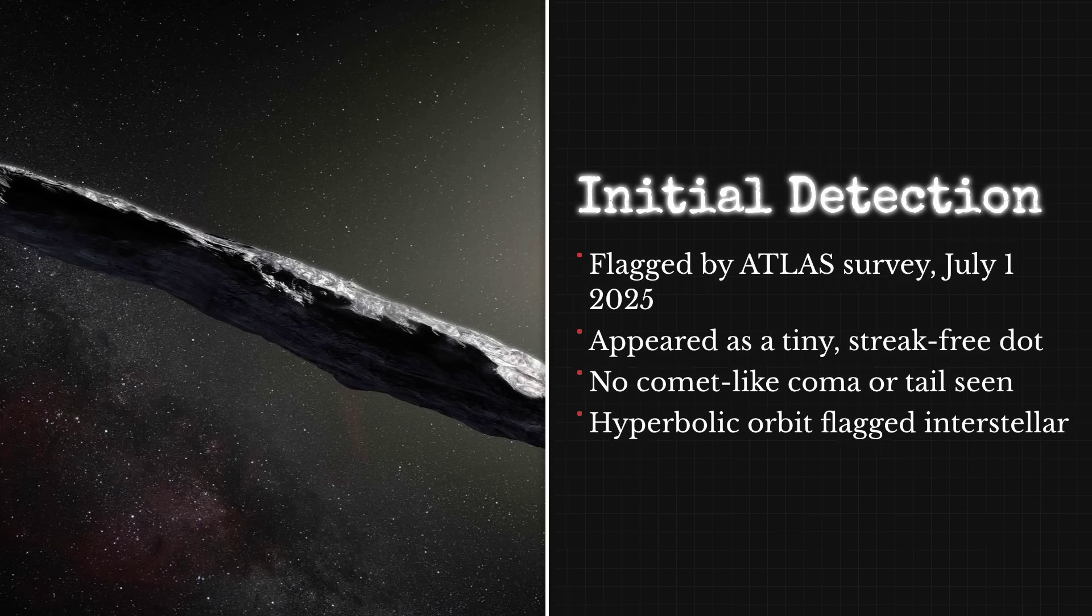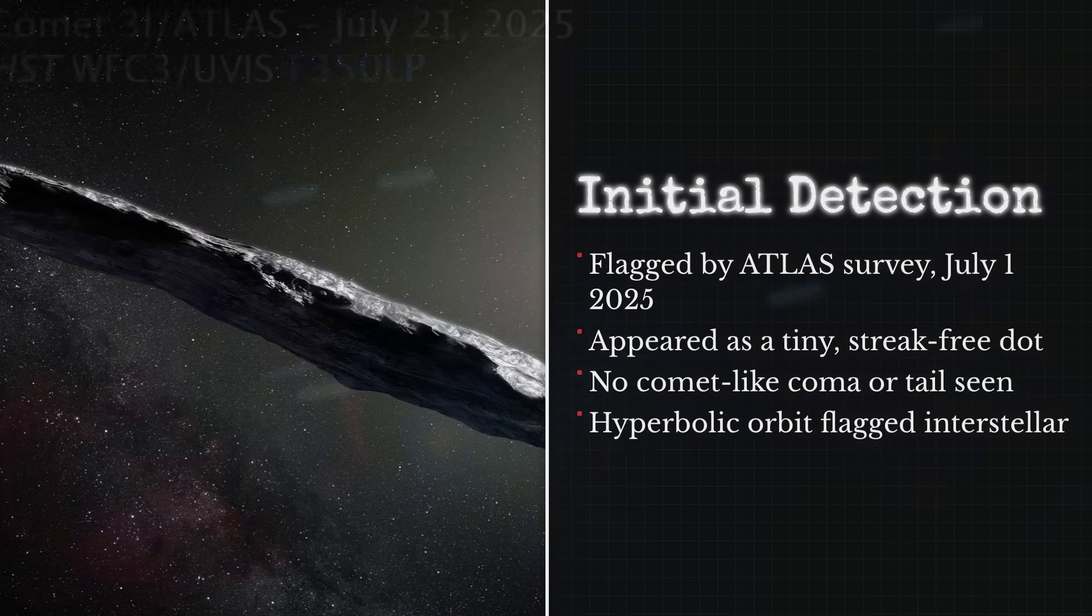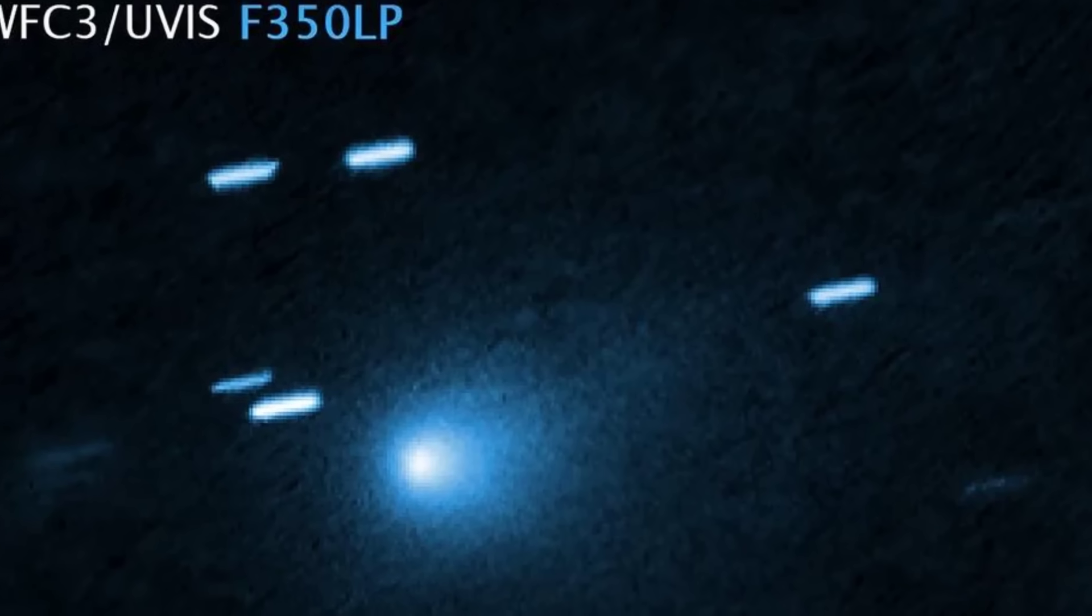The last time we observed an interstellar object of this significance was Oumuamua in 2017, which was much smaller and didn't display any cometary activity. 3I/Atlas is in a completely different category.